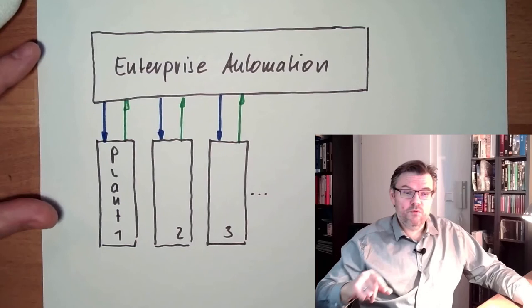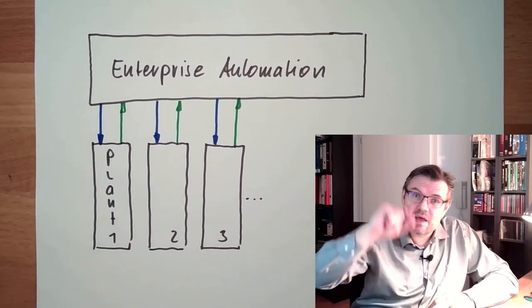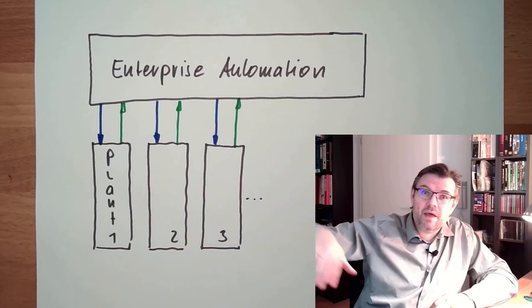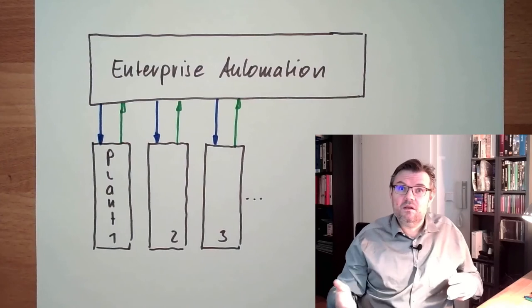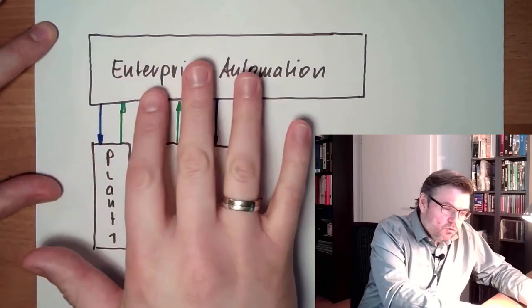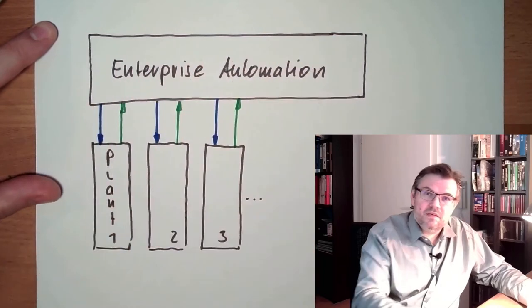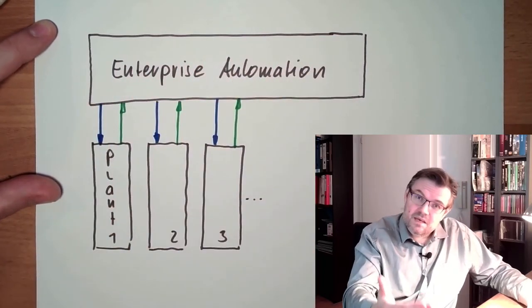What should happen if we really break the network, if something is really happening and there is a total blackout all over Europe or whatever? Which plant is starting, how do we start? These all have to be functions in the enterprise automation of this particular field. You see there are quite some topics.